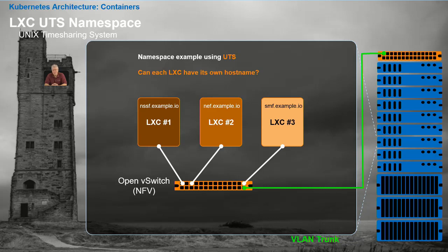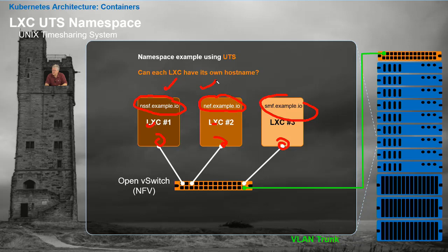The third namespace to focus on is UTS — Unix Timesharing System. It's a really old name, but when it comes right down to it, it just means you can have your own hostname. Each one of these containers could have its own hostname, its own IP address because of network namespace, and they can all run their own processes. With all these different degrees of isolation, each one of these little containers is looking an awful lot like a lightweight virtual machine.